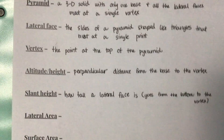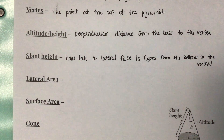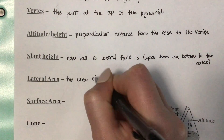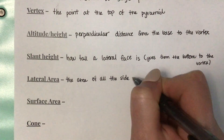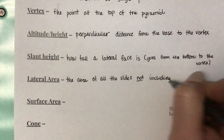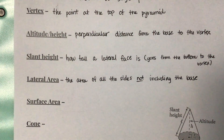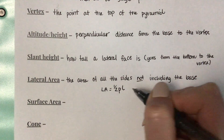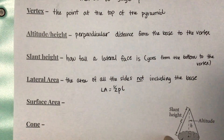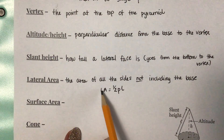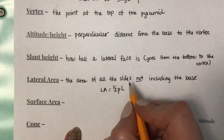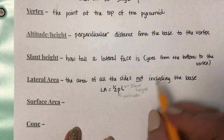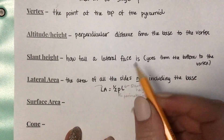Just like with our previous lesson, we have lateral area. Lateral area is going to be the area of all the sides that are not the base. If we want a formula for that, lateral area L-A is equal to one-half the perimeter of the base times l, the slant height. Notice capital L-A stands for lateral area, but lowercase l is slant height. P is perimeter of the base.